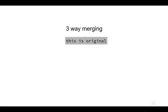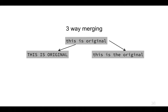Now suppose we have the text 'this is original' and the person on the left branch capitalizes it — 'THIS IS ORIGINAL' — and in the right branch they add 'the' — 'this is the original.' When asked in class, some people think the result should combine both: capitalize everything and add 'the' to get 'THIS IS THE ORIGINAL.' Others think the left branch changed those characters to capitals and the right inserted the three lowercase letters t-h-e, so the result should be 'this is the original' in mixed case.